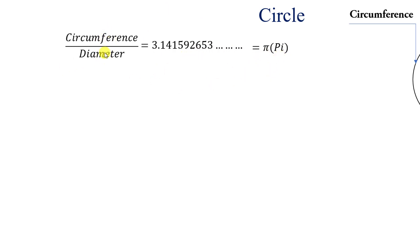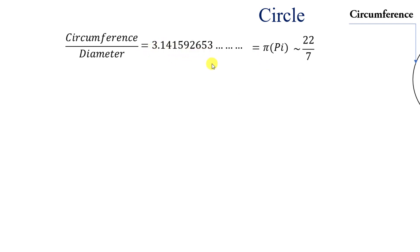This special number is named pi and is denoted by the Greek letter pi. Always, circumference divided by diameter equals pi. Pi is an irrational number; its value is 3.1415926 and so on. For the sake of calculation, pi is taken as 22 by 7. Remember, pi value is 22 by 7, which is approximately 3.14.